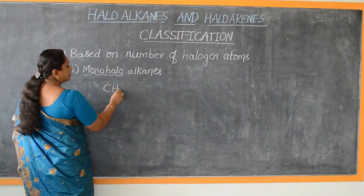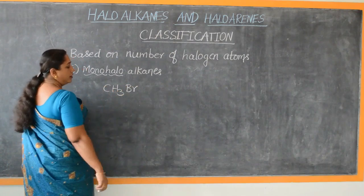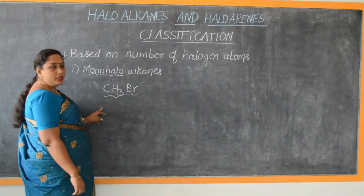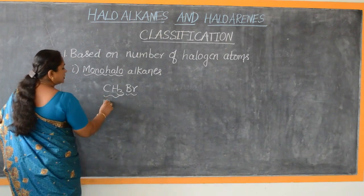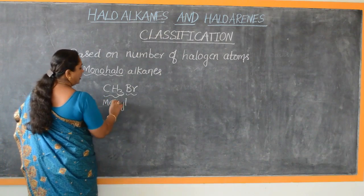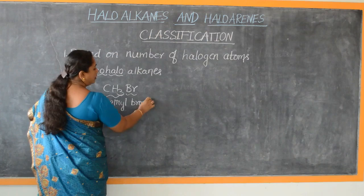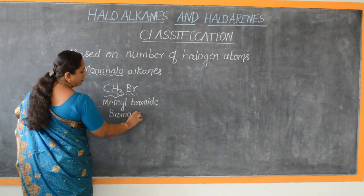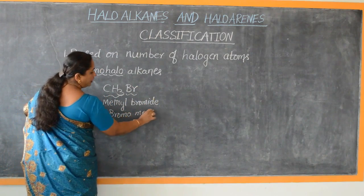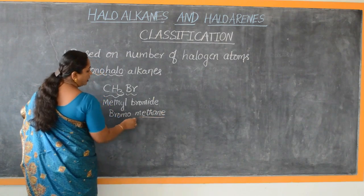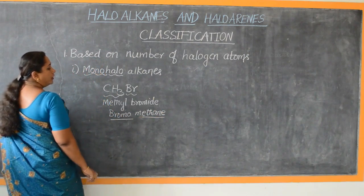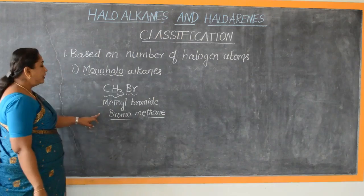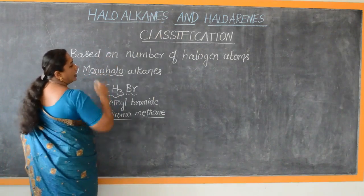For example, CH3-Br. The methyl group is the alkyl group to which Br, bromine, is attached. The name of this compound is methyl bromide — that is its trivial nomenclature. Bromomethane is its IUPAC nomenclature. For IUPAC nomenclature, it should always follow the pattern as halo-alkane, meaning the halogen component is written first followed by the name of the alkane from which it is derived.